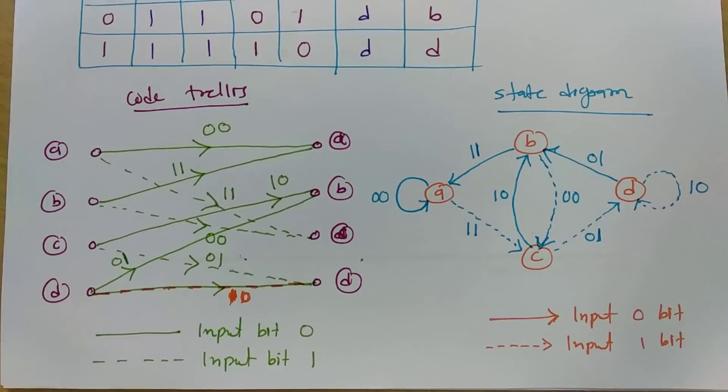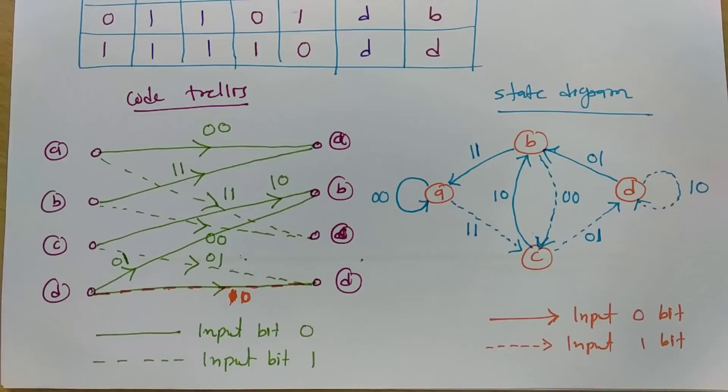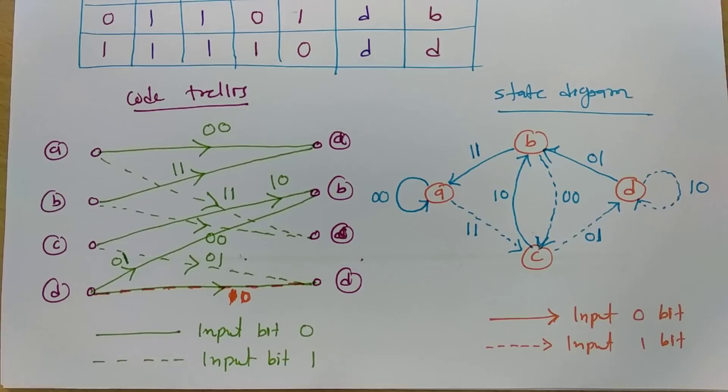I hope that you have understood this session. This is quite helpful in digital communication as well as in digital electronics. The state diagram and code trellis are so essential, so this is what you need to practice. This is the basic process I have explained for how to draw a code trellis and state diagram. Thank you so much for watching this video. You can give your valuable suggestions and I will definitely take care of them in future videos.